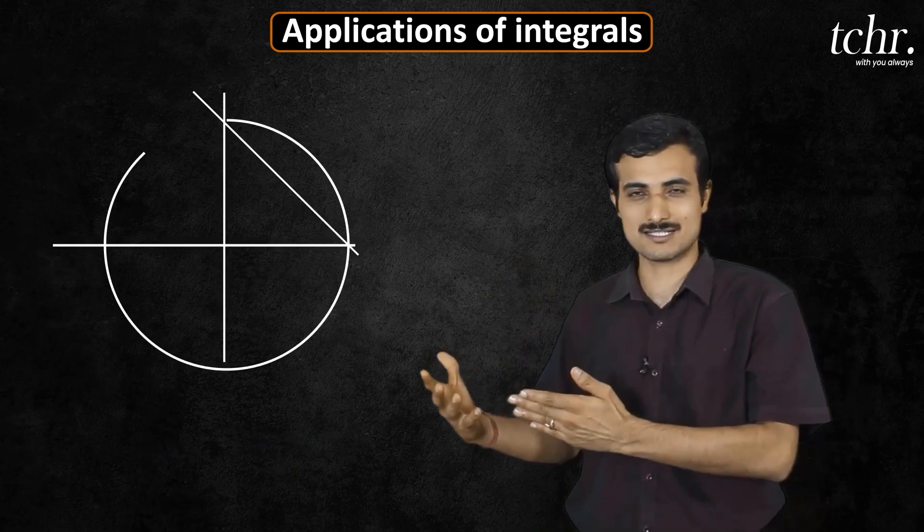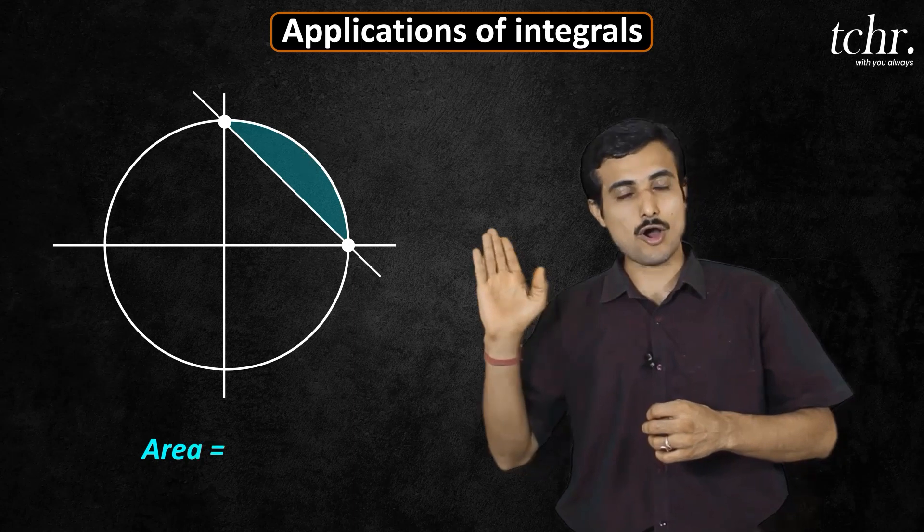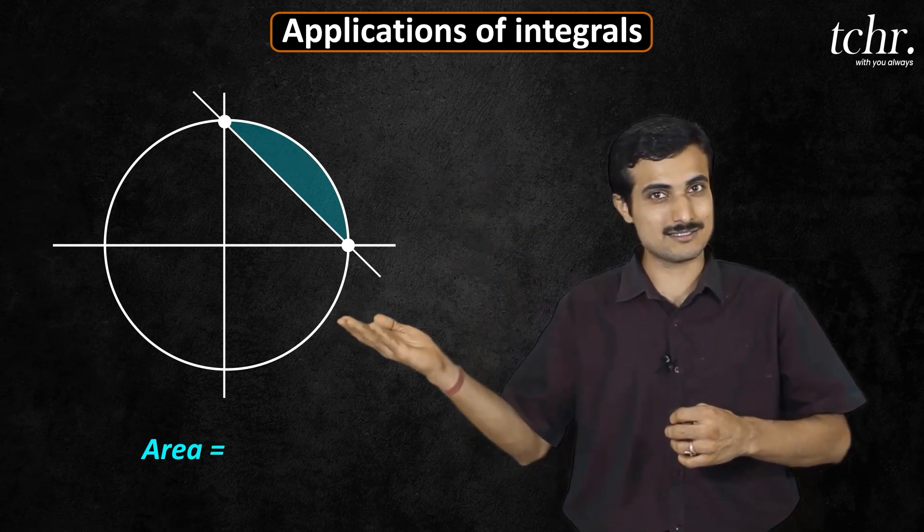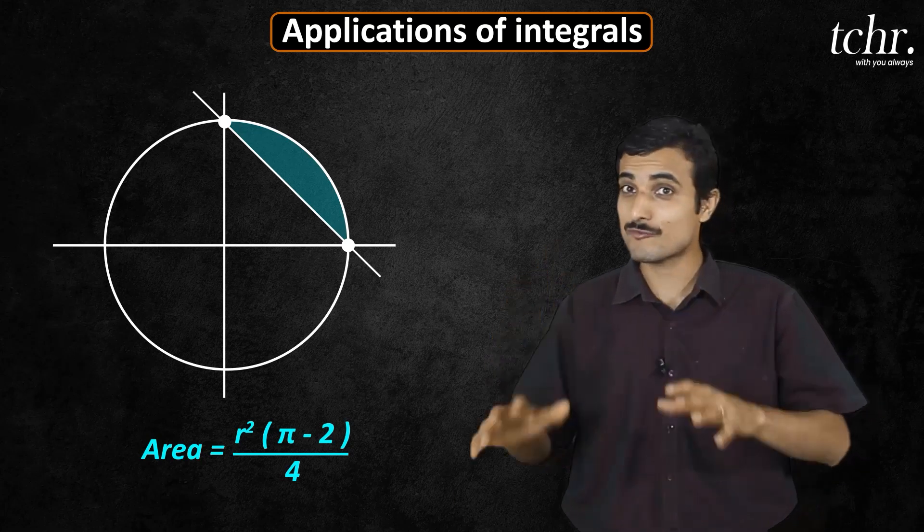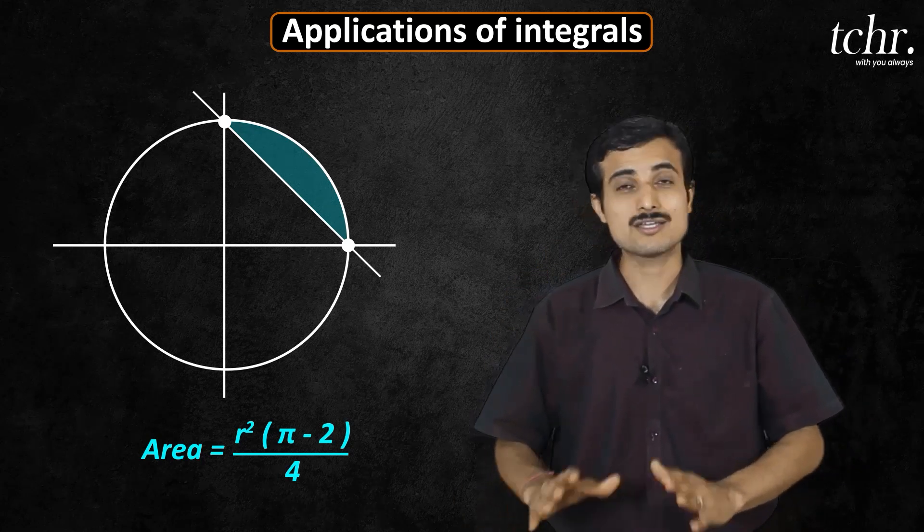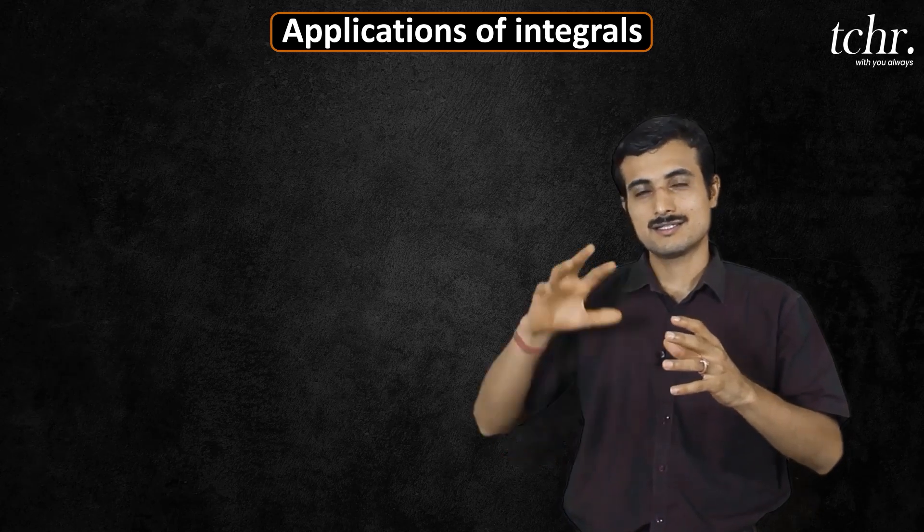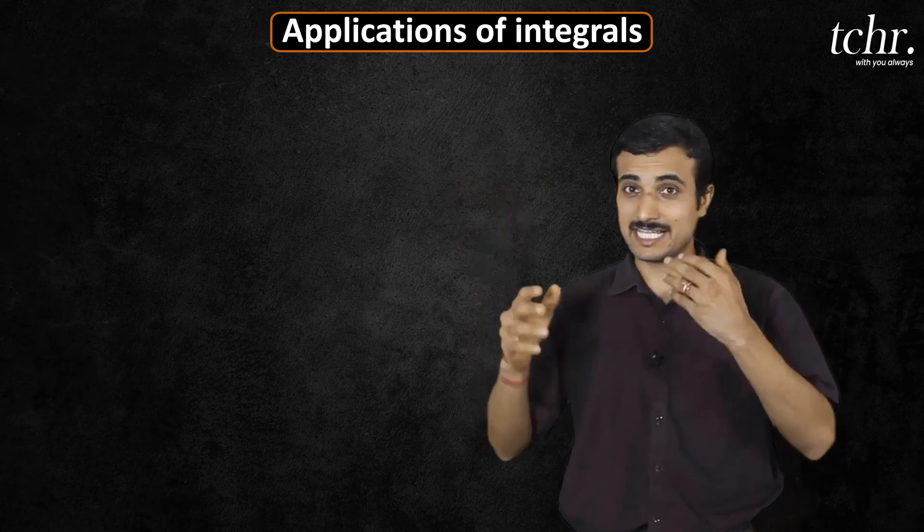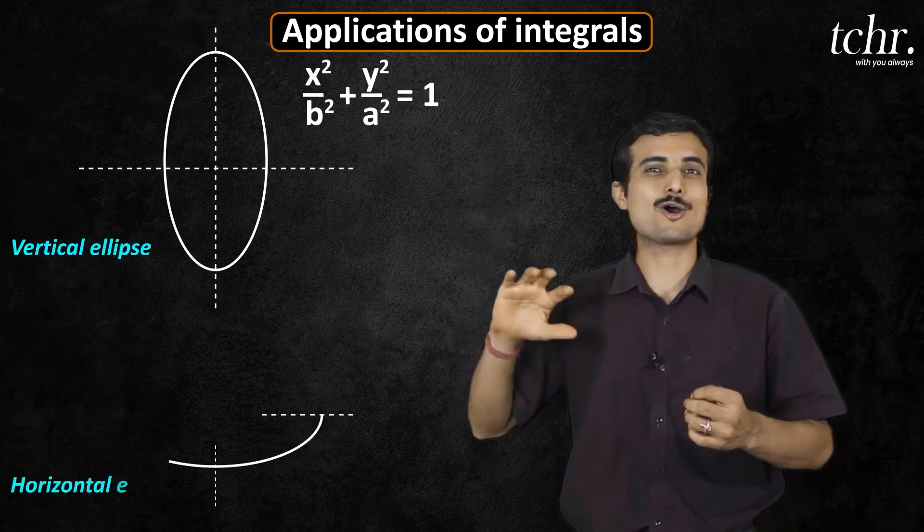In case of circle, the area between the chord and the circle is r square into pi minus 2 divided by 4. These are important shortcuts. Circle area formula, in case of ellipse, vertical ellipse, horizontal ellipse.